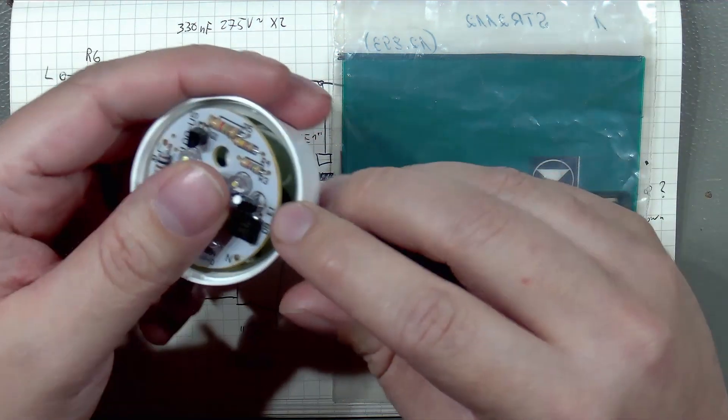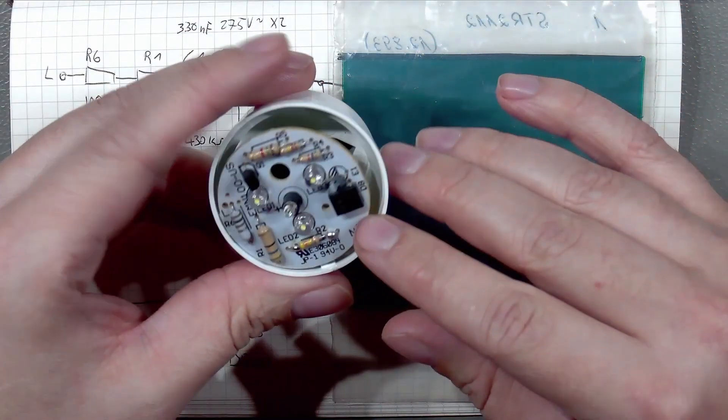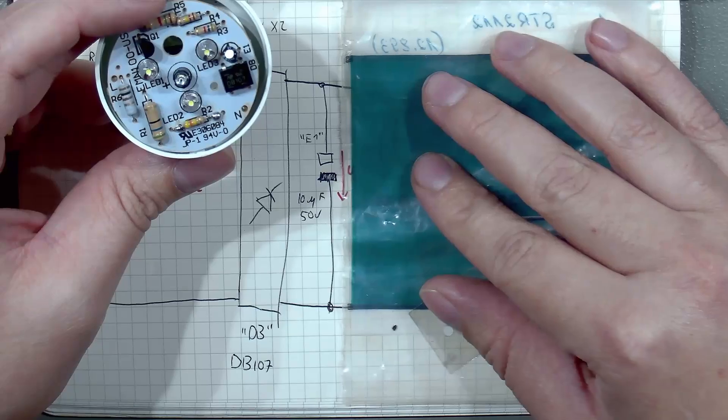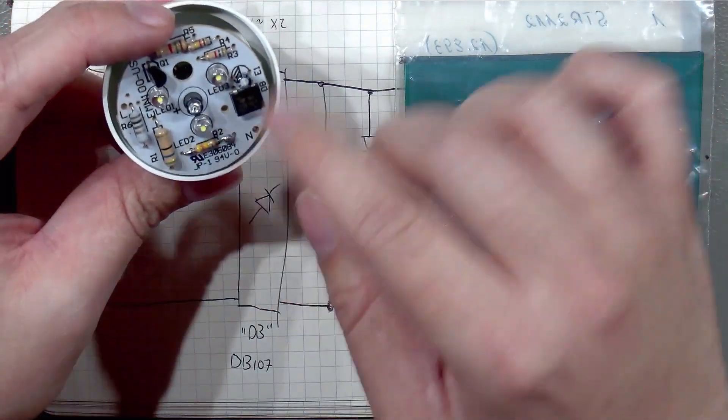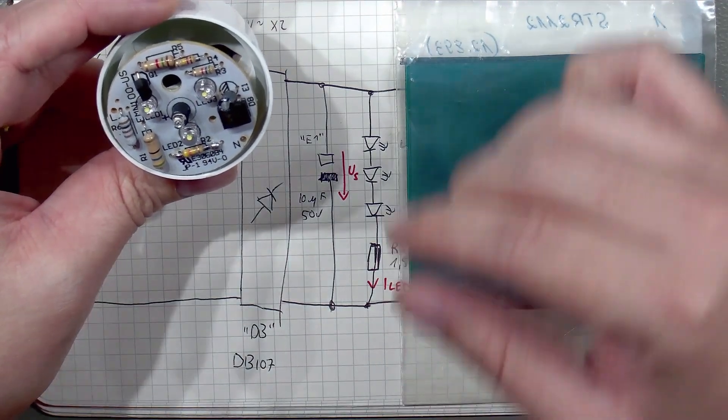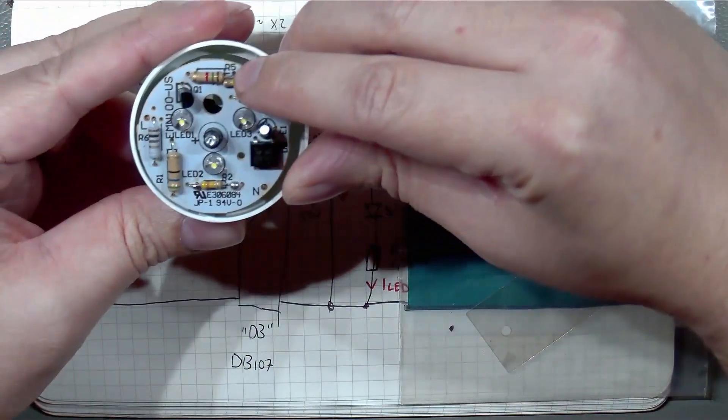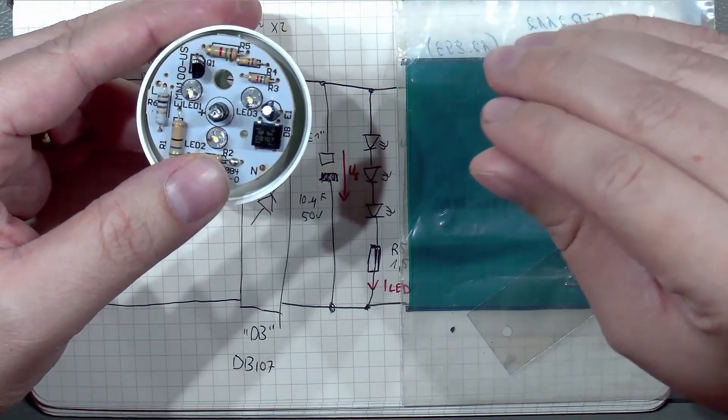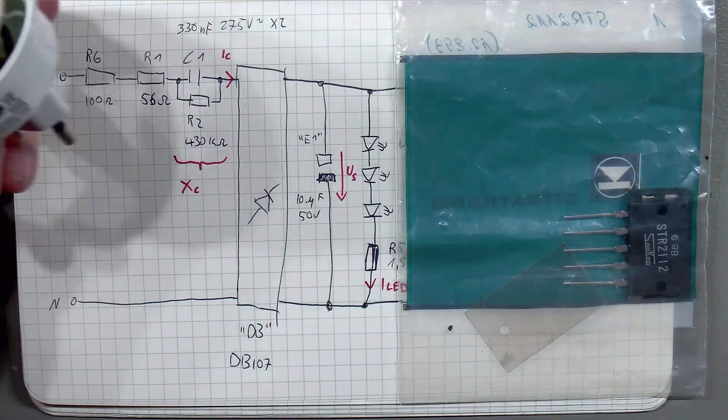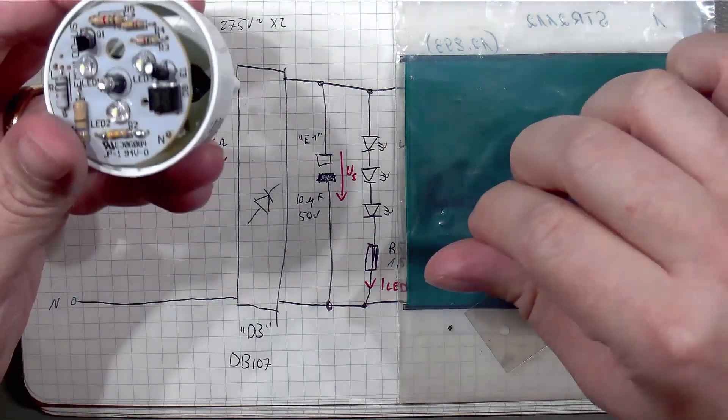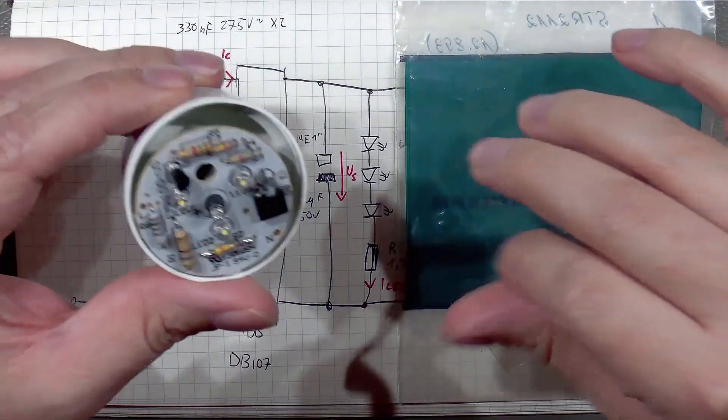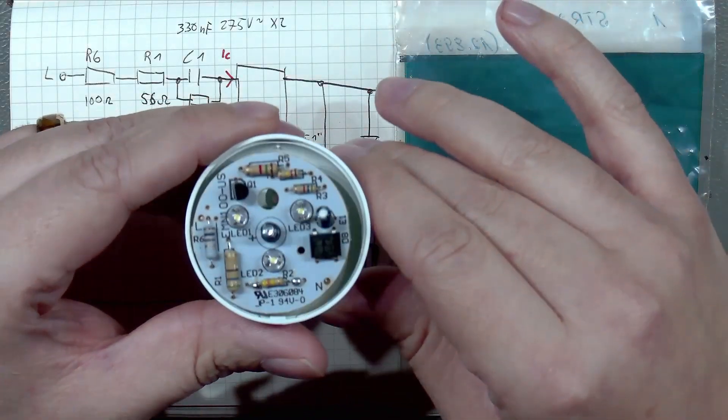After that we have, following the traces on the back side, three LEDs all in series followed by a 1.5 kiloohm resistor R5 which is that slightly bigger one here. So far so good, nothing special. I also measured the voltages and each LED gets roughly 3 volts at roughly 4.5 to 5 milliampere, so that's quite good so far.